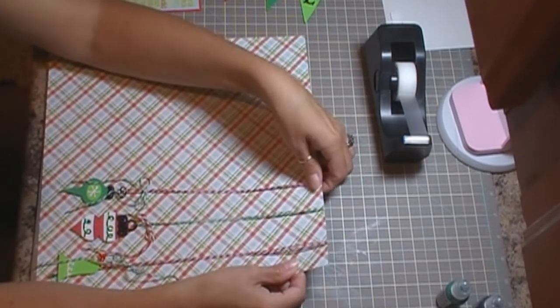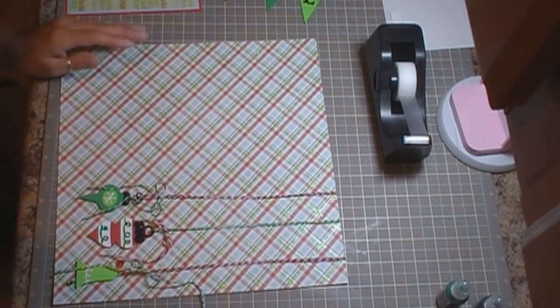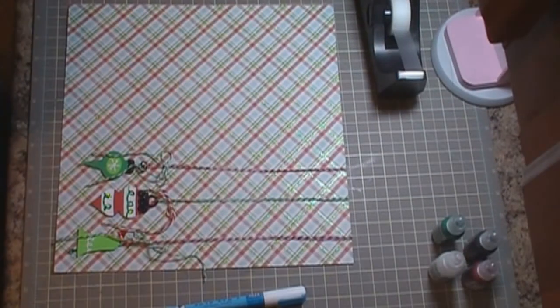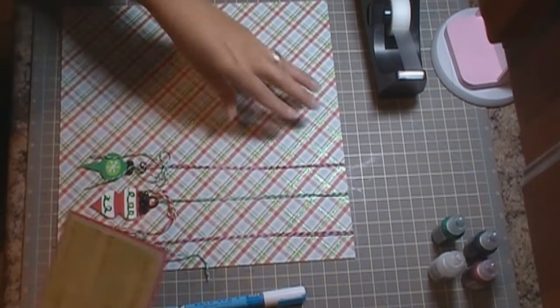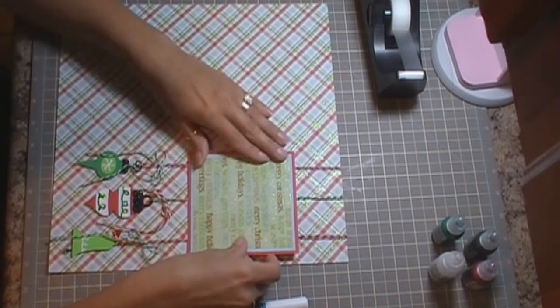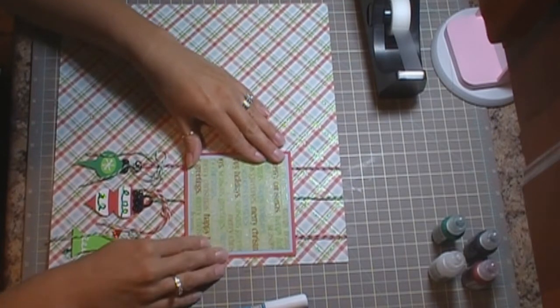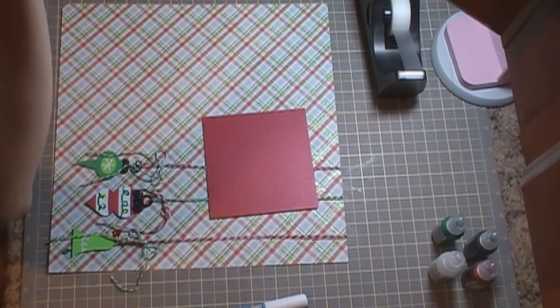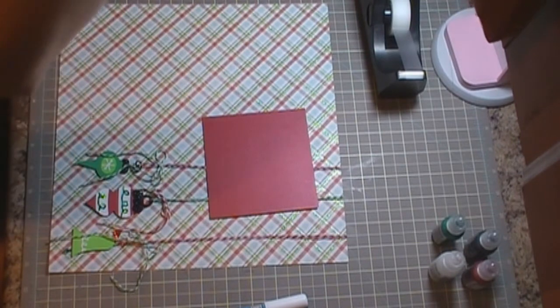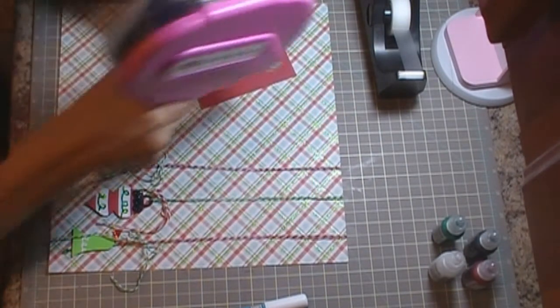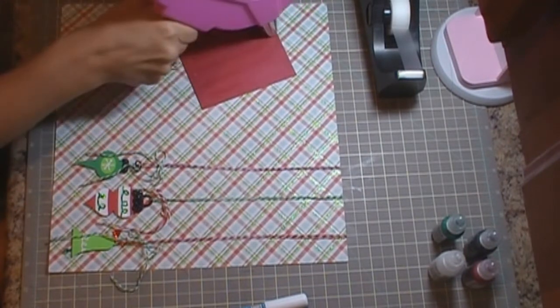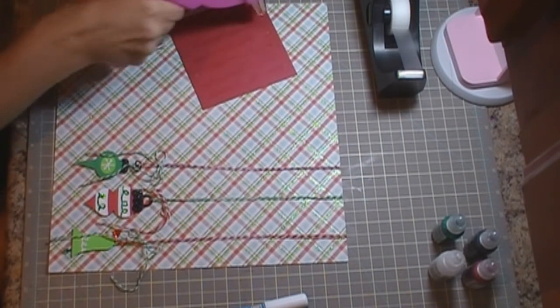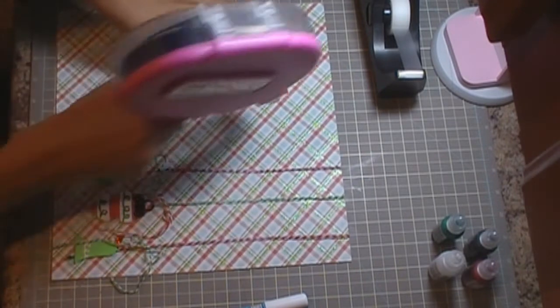So we've got those on there and we're going to go ahead and secure our photo mat on there. And I'm probably going to use a lot of adhesive on this because it's going over so much twine and stuff. I want it to stay on there. I don't want it to come off.